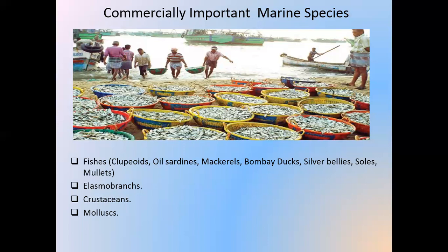Crustaceans — India is one of the major contributors of many crustaceans in the world market. Crustacean species consist of penaeid prawns and non-penaeid prawns. Mollusks — this group represents gastropods and bivalves, mainly clams, mussels, edible oysters, and polychaetes that mainly feed on dead and decayed matter, algae, and phytoplankton.